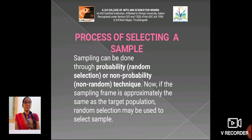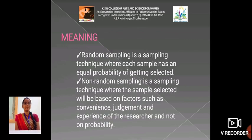The next one is the process of selecting a sample. Sampling can be done using a probability or non-probability technique. If the sampling frame is approximately the same as the target population, random selection may be used to select the sample. Random sampling is a sampling technique where each sample has an equal probability of getting selected. Non-random sampling is a sampling technique where the sample selected will be based on factors such as convenience, judgment, and experience of the researcher, and not on probability.